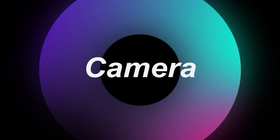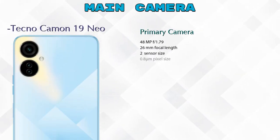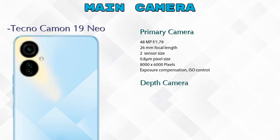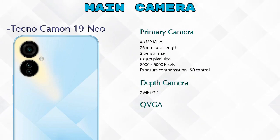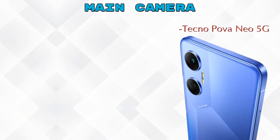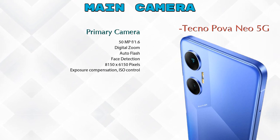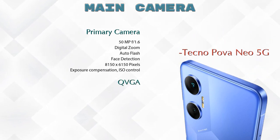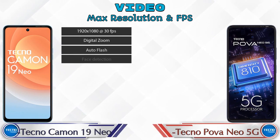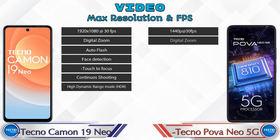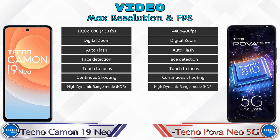Now let's look at the cameras. The Camon 19 Neo has three rear cameras: a primary camera, a depth camera, and a QBGA sensor. The Neo 5G has two rear cameras: a primary camera and a QBGA sensor. For video, both phones offer seven different types of video recording features.